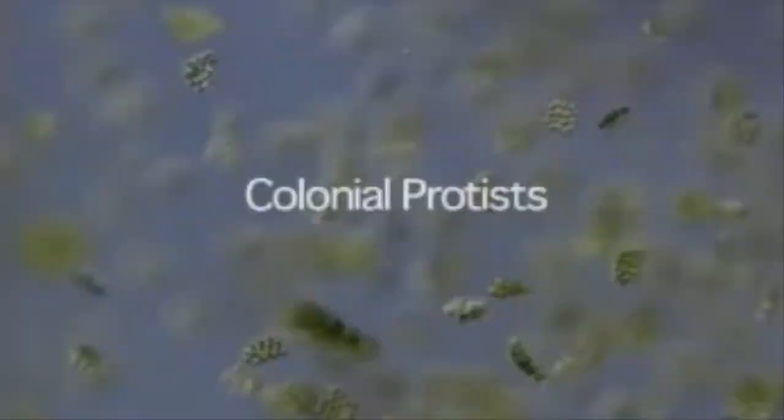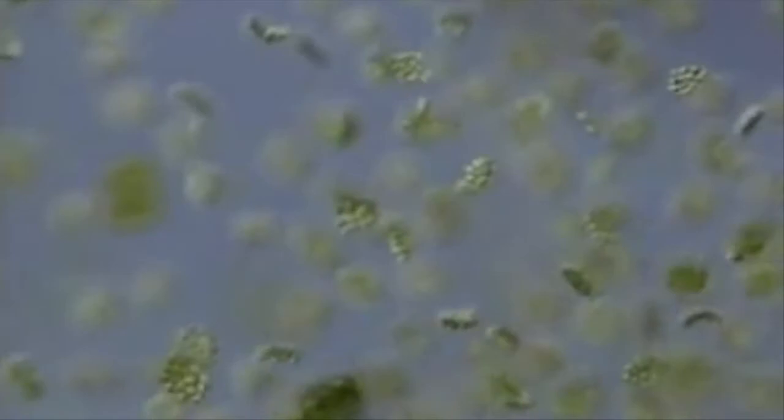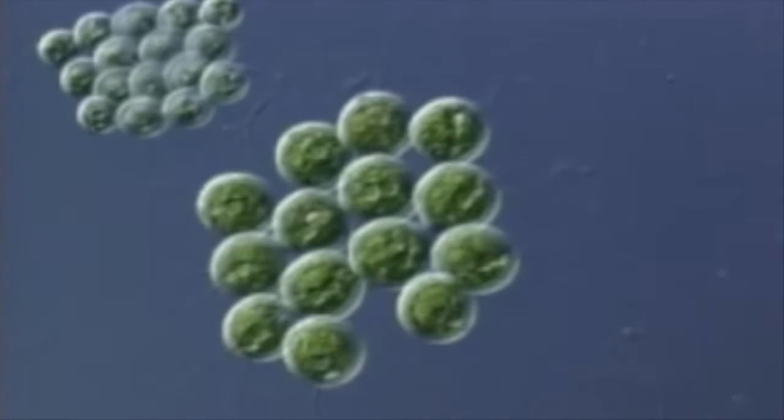Colonial green protists let us imagine how simple plants evolved from single cells like these. In the same drop of pond water you can find small colonies such as gonium, usually with 16 cells. Euterina, a 32 cell colony. And the queen of colonial protists, volvox, with thousands of flagellated cells lining the sphere.